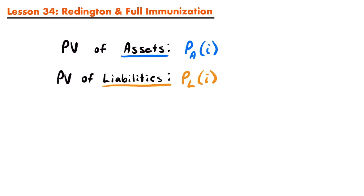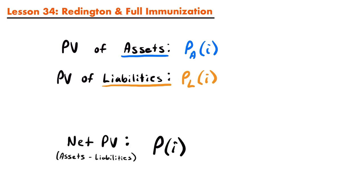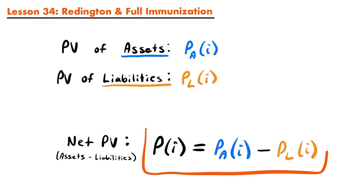For a particular business, we would be interested in knowing the net present value — essentially the difference between the assets and liabilities. The assets are incoming payments and the liabilities are outgoing payments. Assets represent the money a business is making, and liabilities represent the money the company owes. We will represent the net present value as capital P of i, equal to the present value of the assets minus the present value of the liabilities.